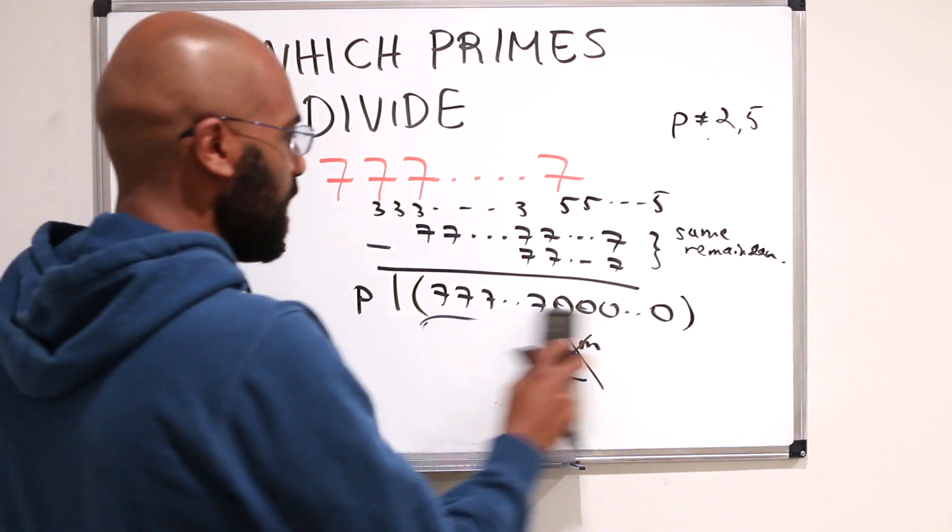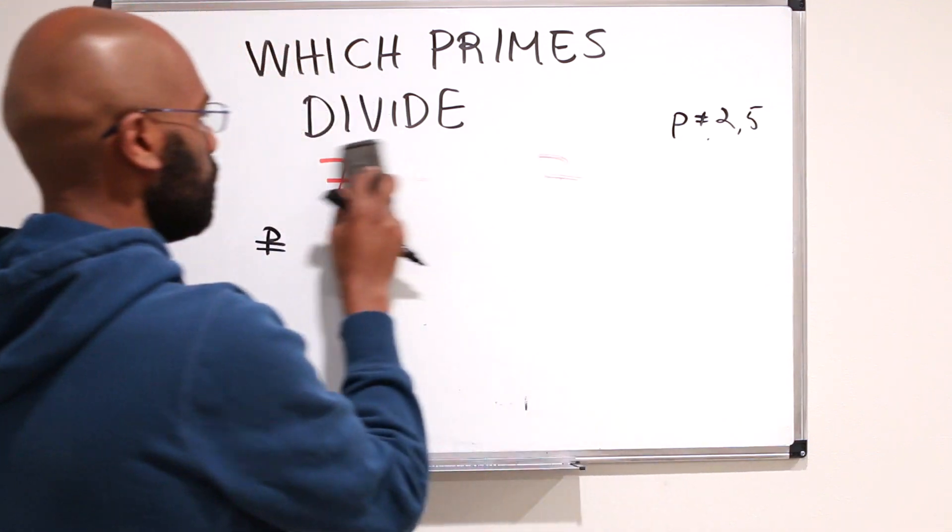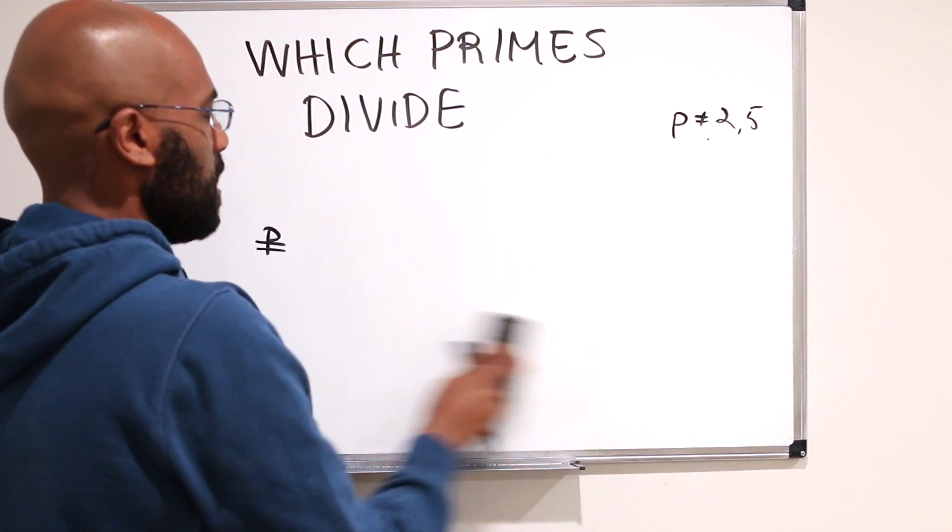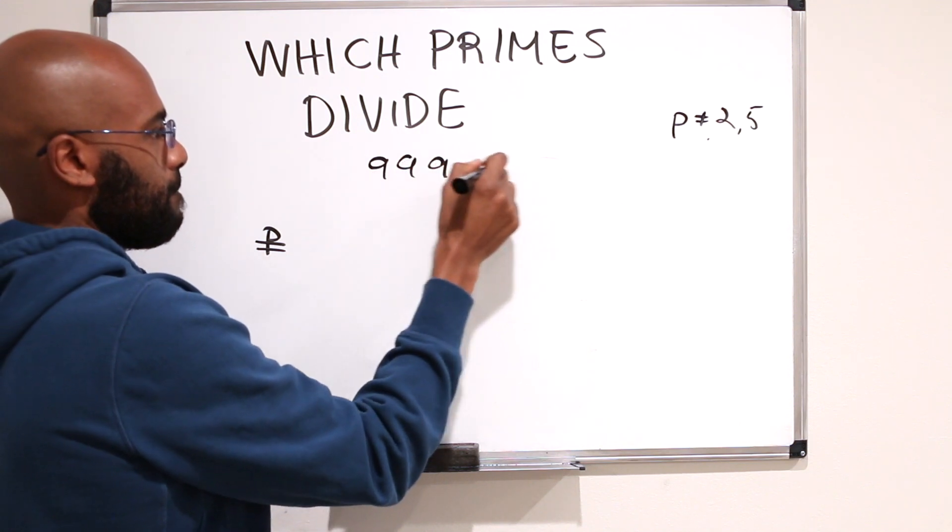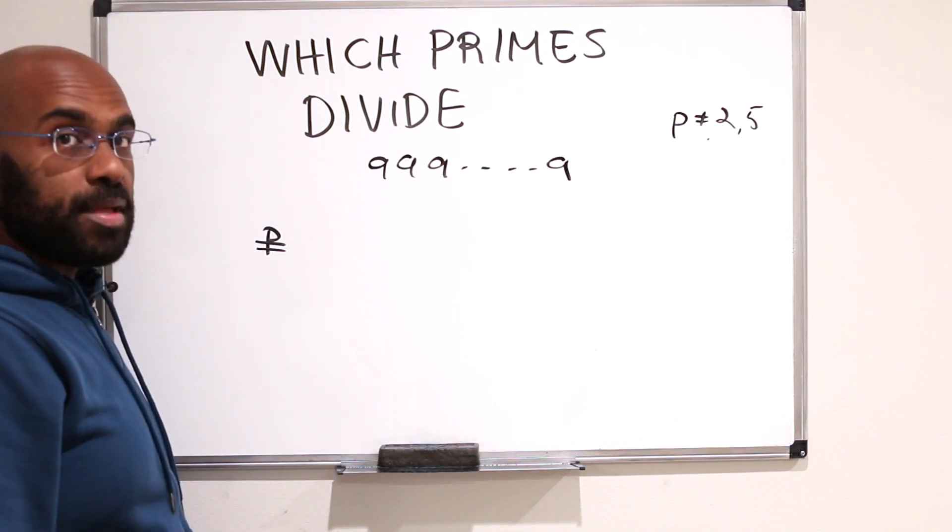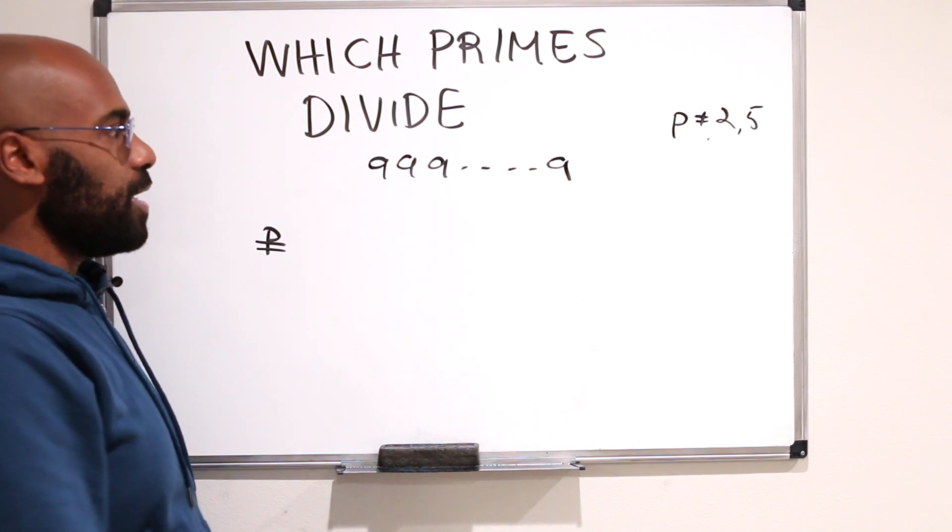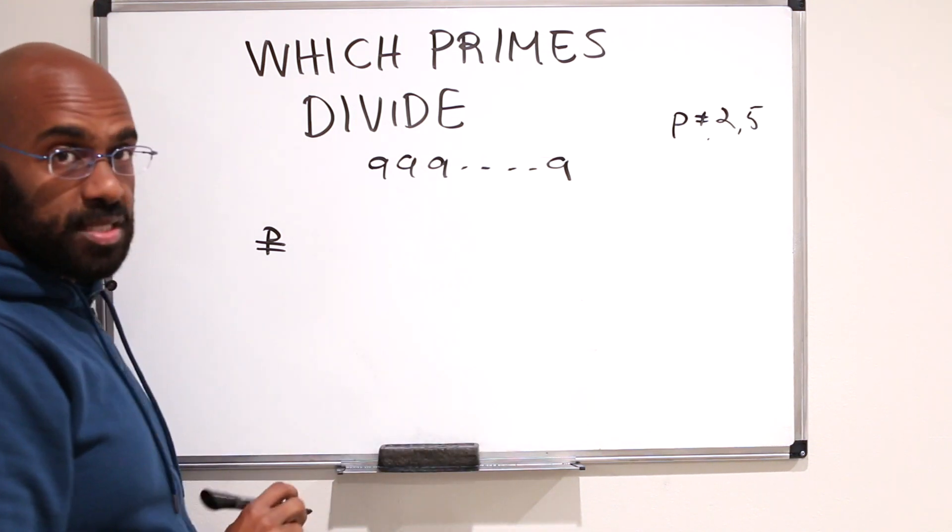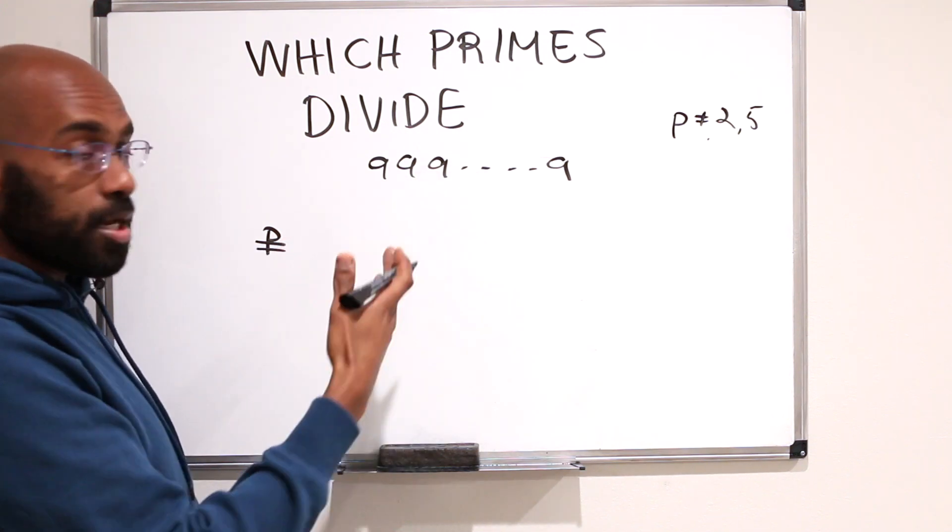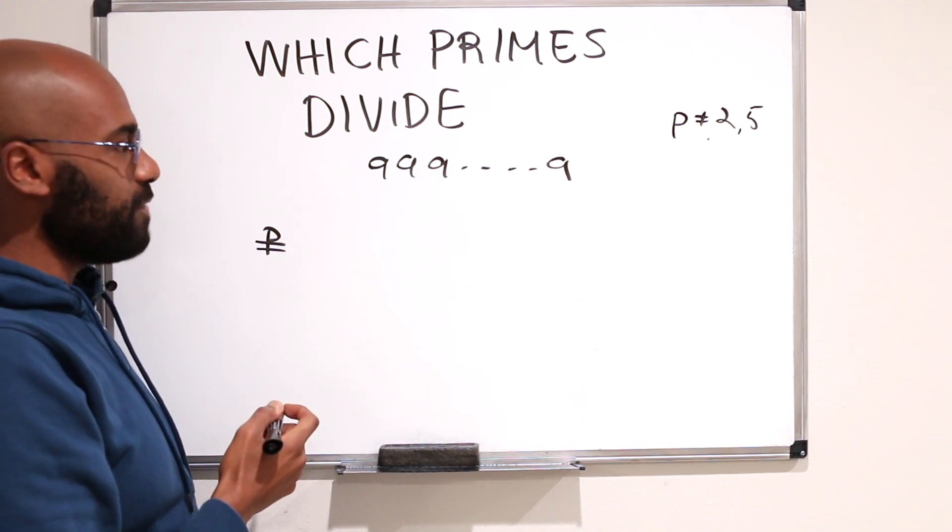I want to think about the 9 situation. So if we look at a number that has a bunch of 9s, then if p is a prime that doesn't divide 2 or 5, then it has to be the case that p divides this number right over here according to the same argument that we use for the number with all 7s.